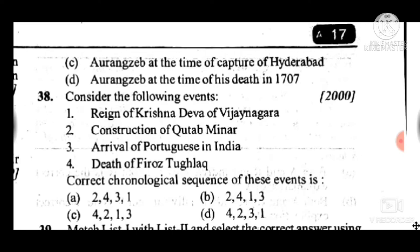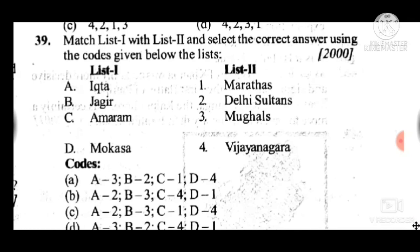Question 39 is a match-list question. Answer is B: Ikta relates to Delhi Sultanate, Jagir relates to Mughals, Amaram relates to Marathas, and Mokasa relates to Vijayanagara.